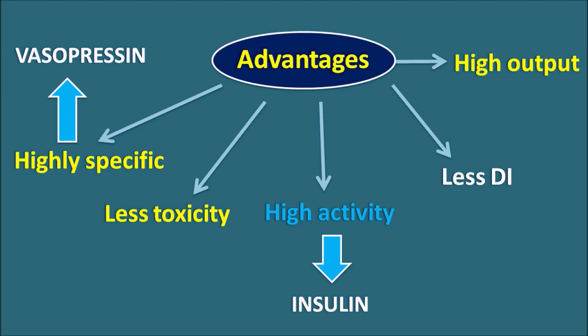Even though peptides have practical limitations such as less oral bioavailability and less diffusion into cells, they still have advantages because of their high specificity and high activity. In this video, we will deal with different types of peptides as drugs — how they are given, how they act, and where they are used. So let's go one by one. The first one is lisinopril.